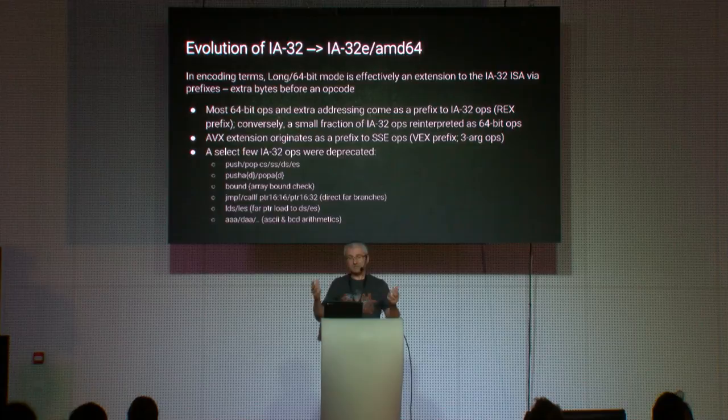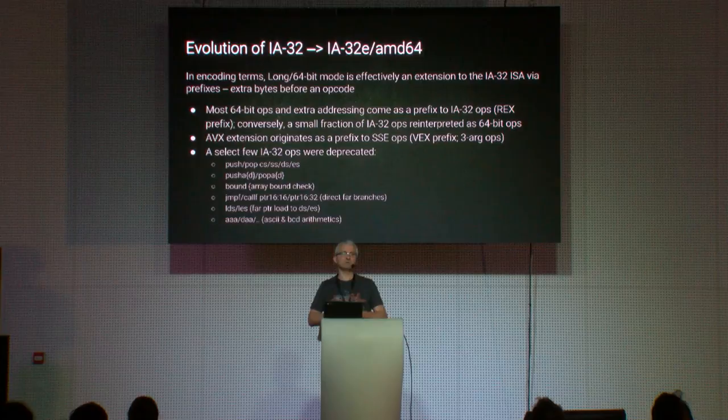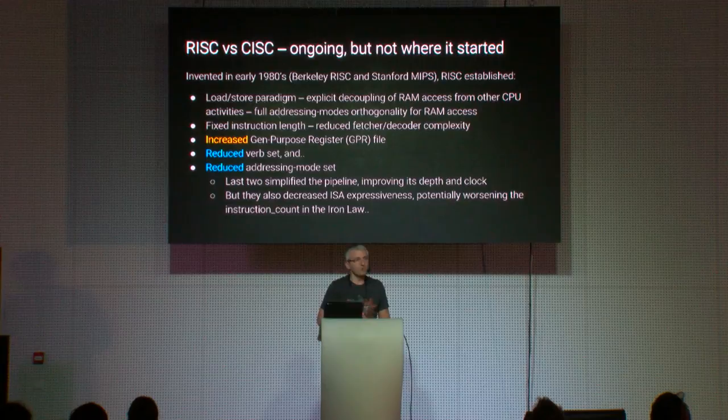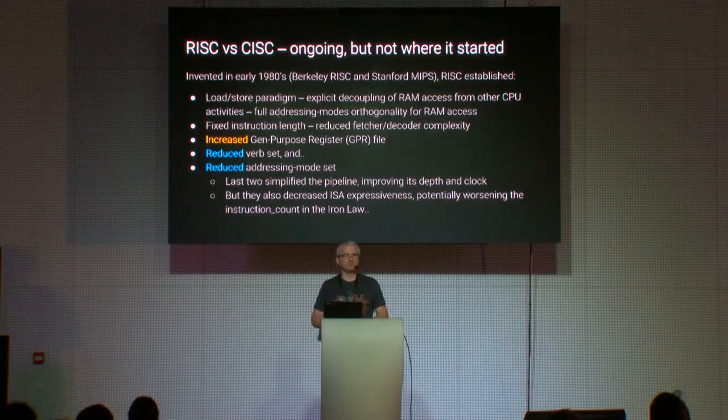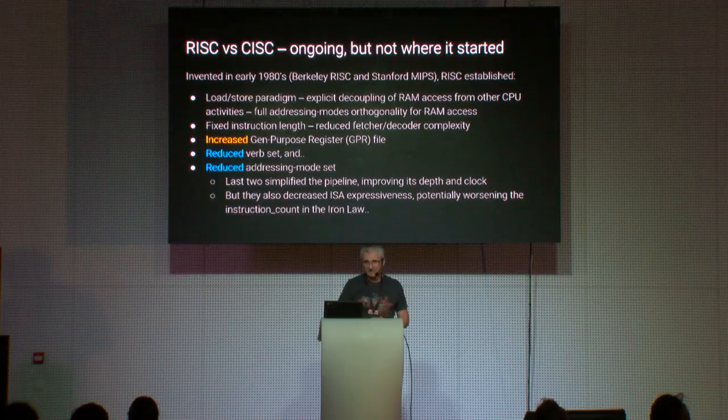Somewhere in the mid-80s, the RISC versus CISC dichotomy appeared. RISC and CISC concepts emerged simultaneously at Berkeley and Stanford, where researchers concluded that five paradigms really changed the way ISAs operate. The first and most important was that CPU access to memory should be decoupled from all other CPU activities — the load-store paradigm, implemented by all RISC processors. Dedicated instructions deal only with memory access, so all other instructions only need good access to registers.